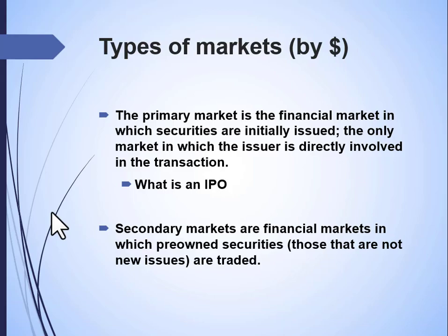We can define markets by where the money goes. The primary market is when securities are issued for the first time — it's the only market in which the issuer is directly involved in the transaction. This is what we refer to as an IPO, or initial public offering, the first time a stock is ever issued. Secondary market transactions happen after that first issuance — investors are simply trading with other investors. The key difference is who gets the money: in the primary market, the company receives funds from investors; in secondary markets, the company gets nothing other than notification that ownership has changed.